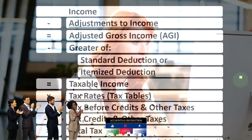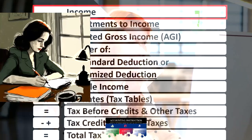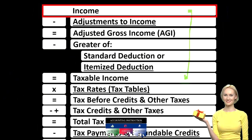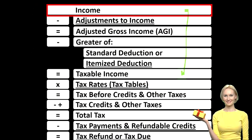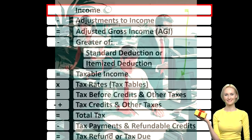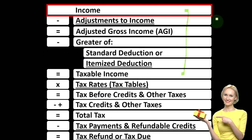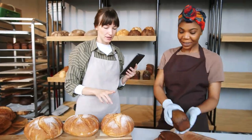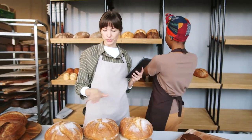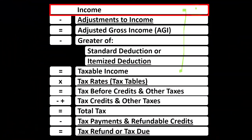Looking at the income tax formula, we're focused on line one income. The first half of the income tax formula is in essence an income statement — just an outline, a scaffolding with other forms and schedules feeding into these line items, such as the Schedule C, which is the small business tax form. It's basically an income statement in and of itself, having income minus expenses or business deductions, with the net income flowing into line one income of the income tax formula.